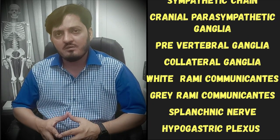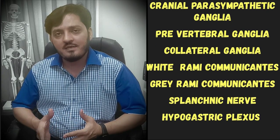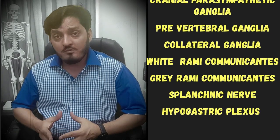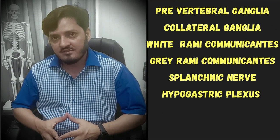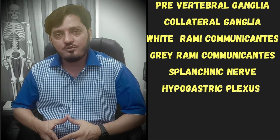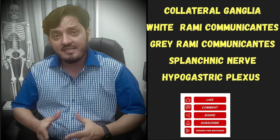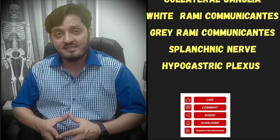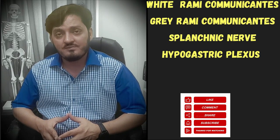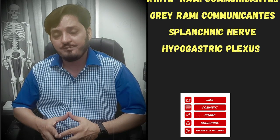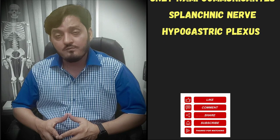In the autonomic nervous system, I'll teach you the concept of the white rami communicantes and the gray rami communicantes. I'll teach you the concept of the splanchnic nerves and how they form plexuses in the abdomen and the pelvis, especially the hypogastric plexus. So let's start our lecture now.